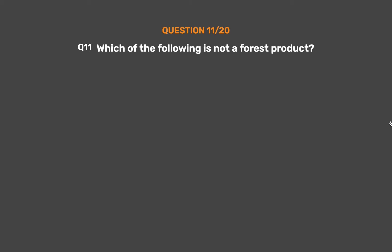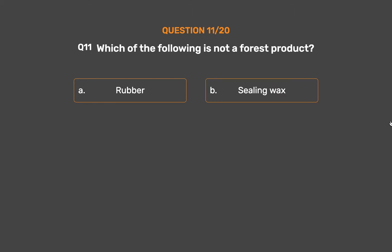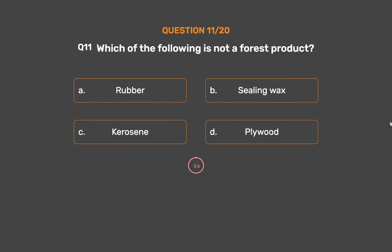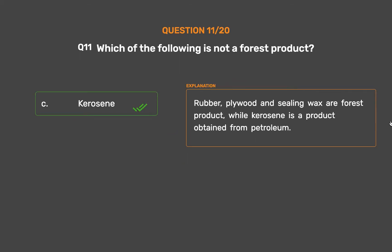Question number 11. Which of the following is not a forest product? Option A: Rubber. Option B: Sealing wax. Option C: Kerosene. Option D: Plywood. The correct answer is Option C: Kerosene. Rubber, plywood and sealing wax are forest products, while kerosene is a product obtained from petroleum.